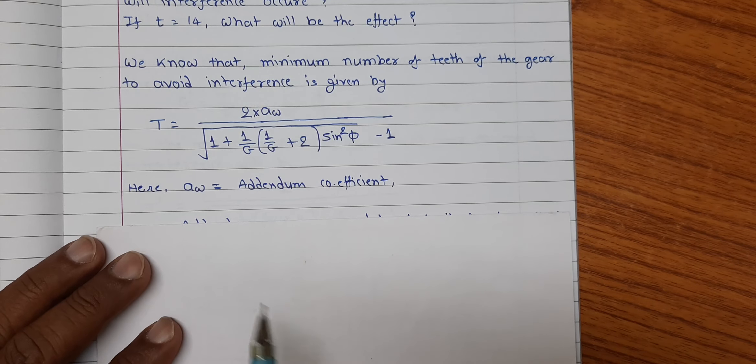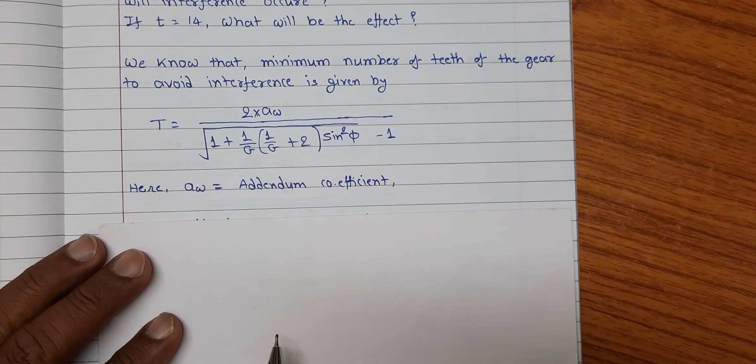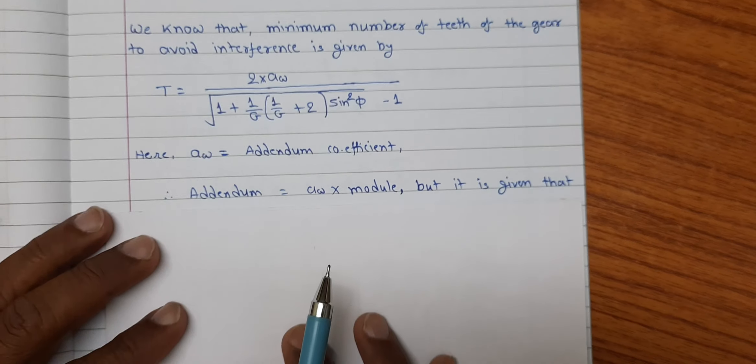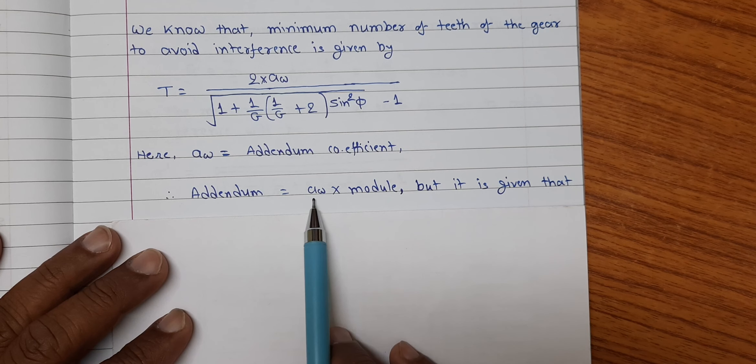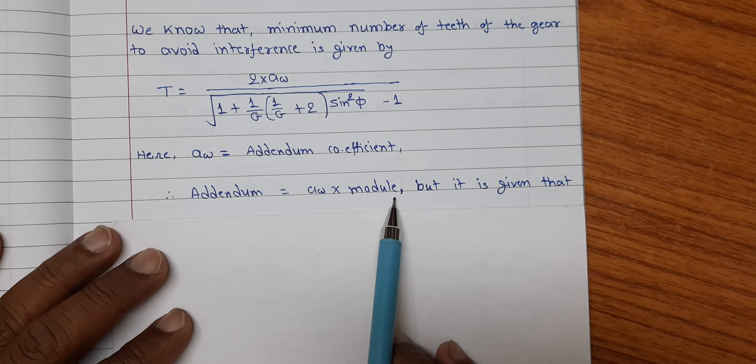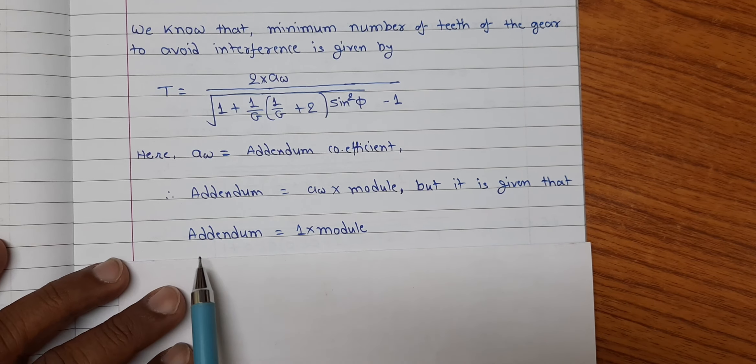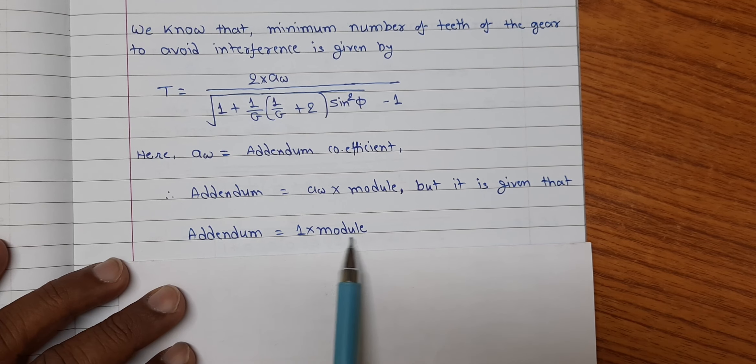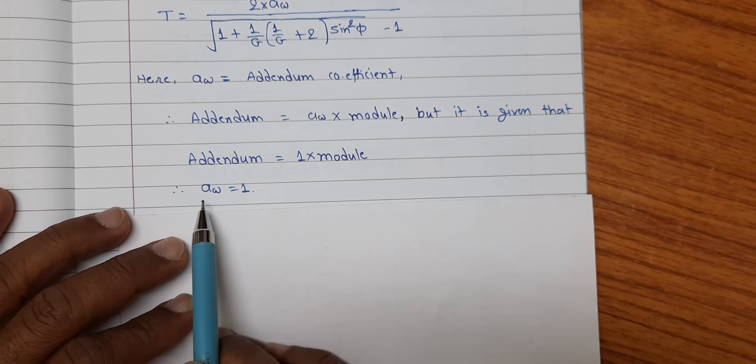Where a omega is addendum coefficient. And we know that addendum is given by a omega into module. But it is given that the addendum is equal to 1 into module. So, a omega is equal to 1.